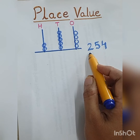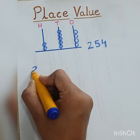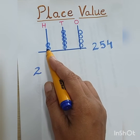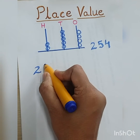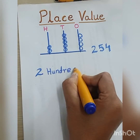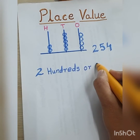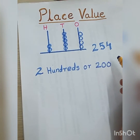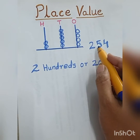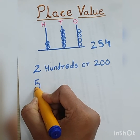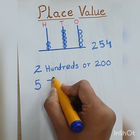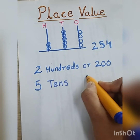Now I want to write the place value of number 2. 2 is at the hundreds place, so I can write two hundreds, or 200, as the place value of number 2. After that I will take number 5. Now 5 is at the tens place, so I will write 5 tens, or 50.